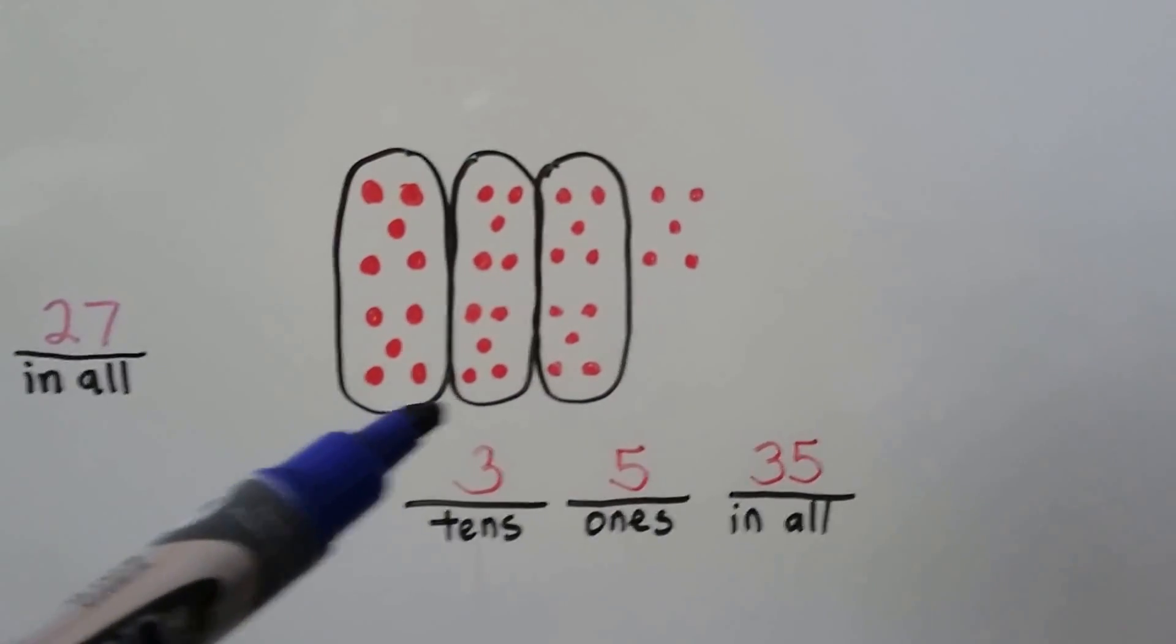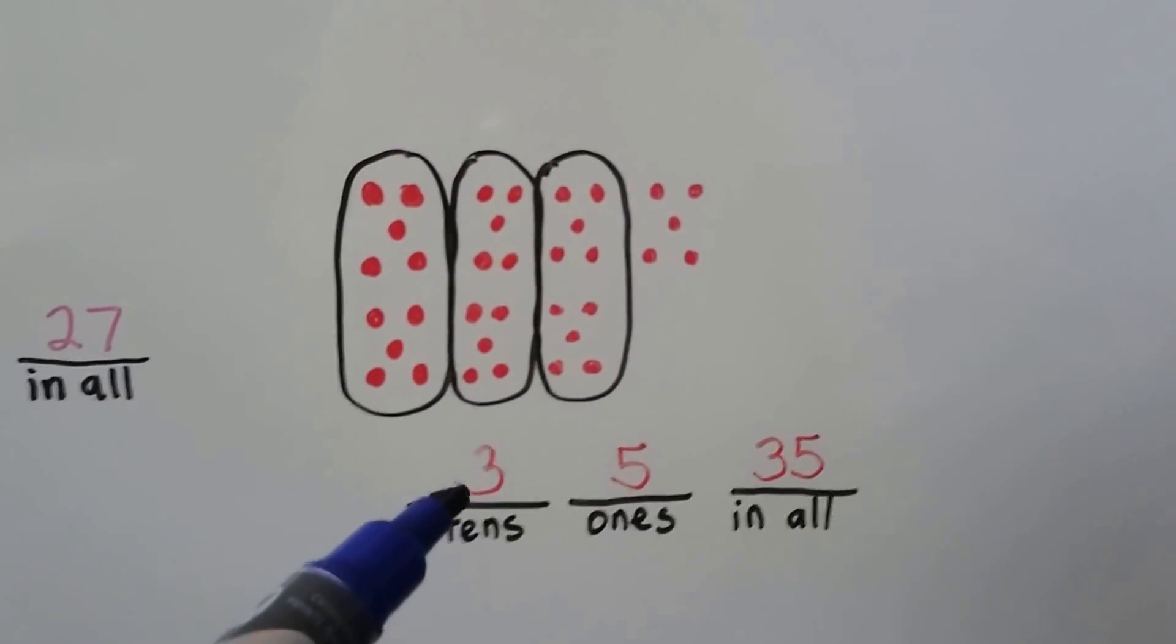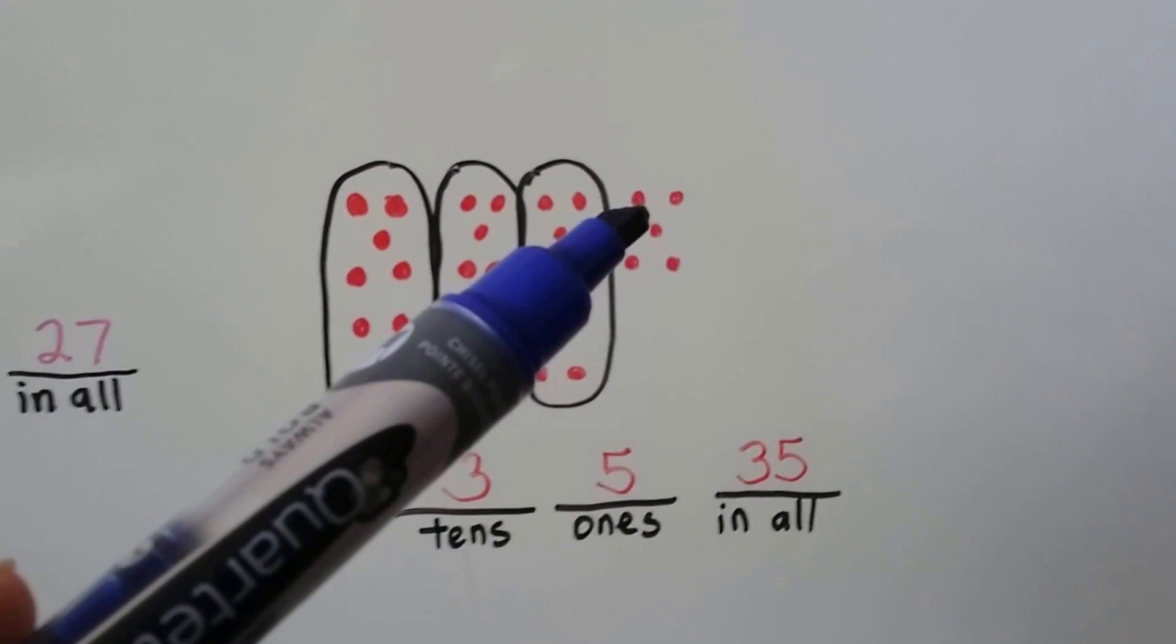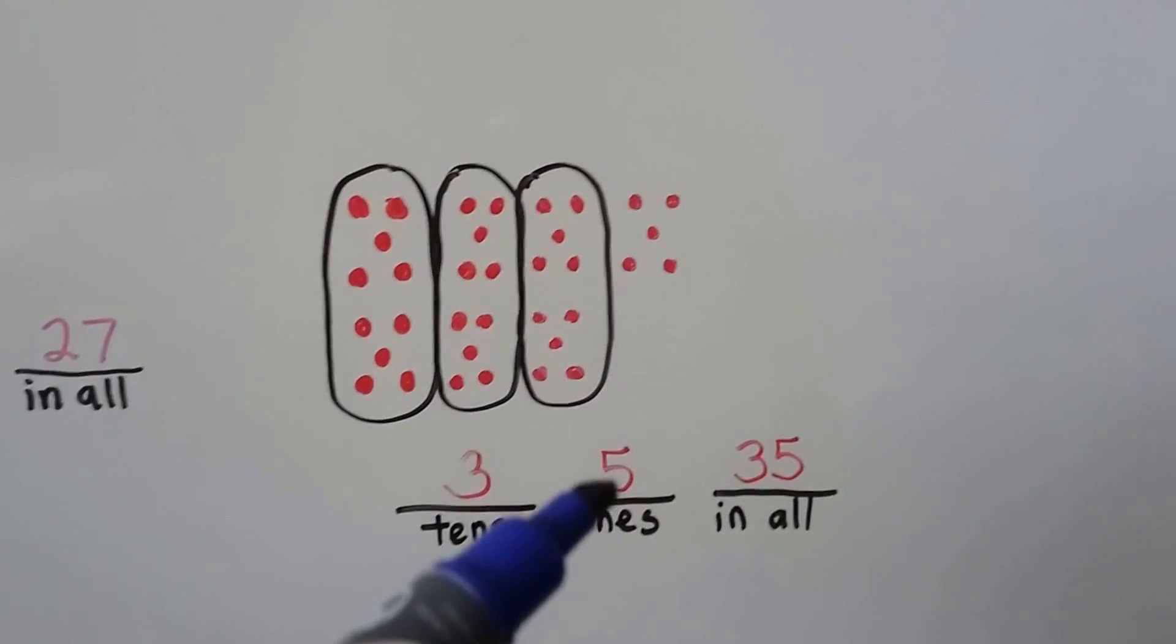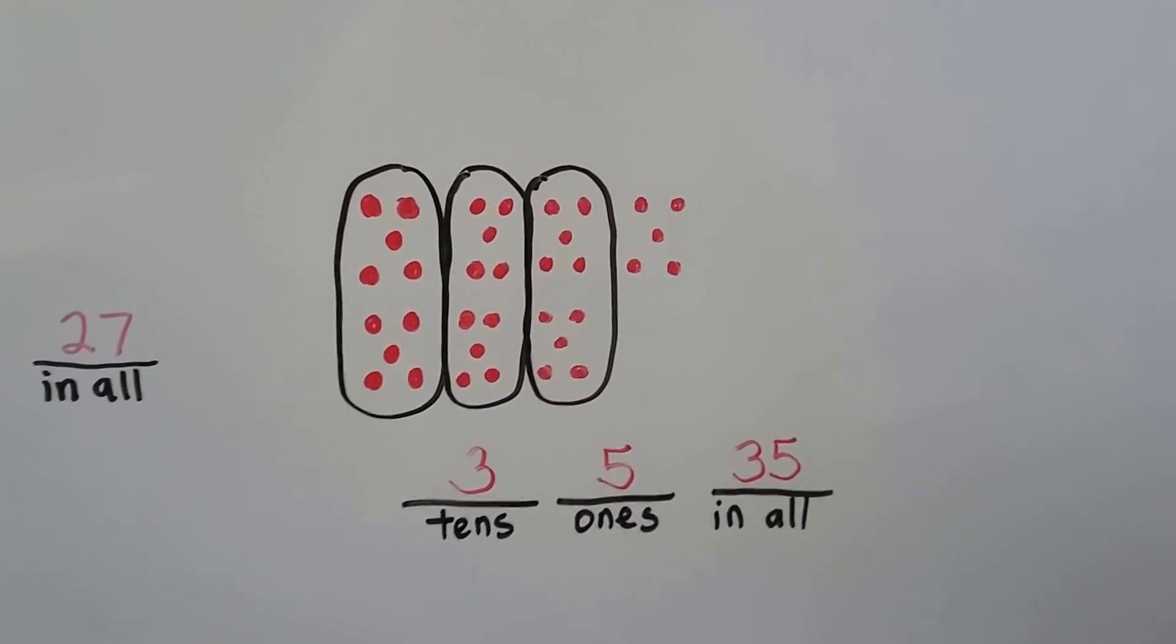Here we circled three groups of ten. We have three tens. And we have one, two, three, four, five ones. So we have 35 in all.